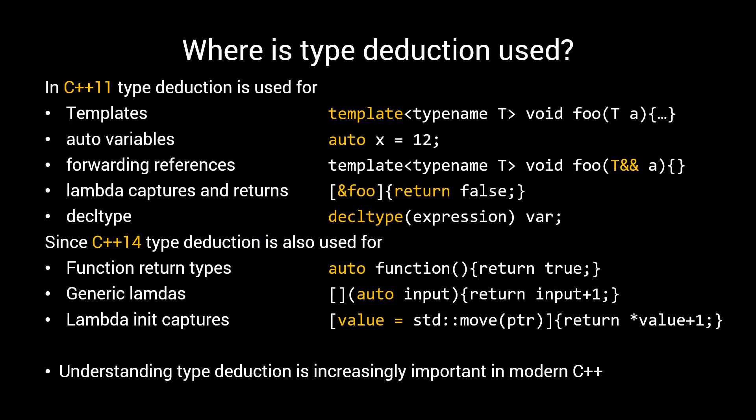Welcome back to the second part of this Bits of Q tutorial on type deduction. In the first part we established that with modern C++, type deduction can be found all over the place, from template type deduction to generic lambdas.